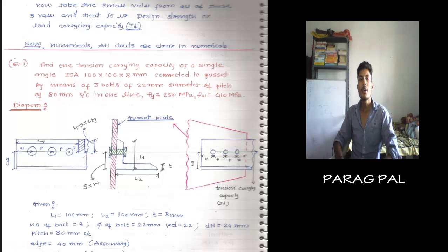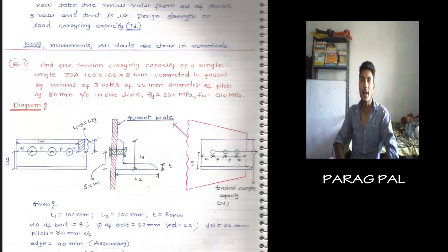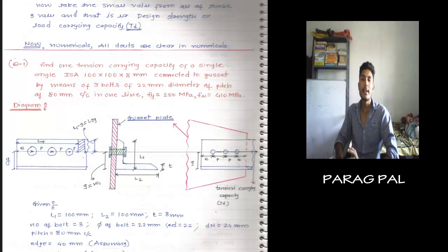In this lecture we are talking about a numerical: find the tension carrying capacity of a single angle ISA 100 by 100 by 8 mm, connected to the gusset by means of 3 bolts of 22 mm diameter, pitch of 80 mm, center to center in one line. Fy equals 250 MPa and Fu equals 410 MPa.